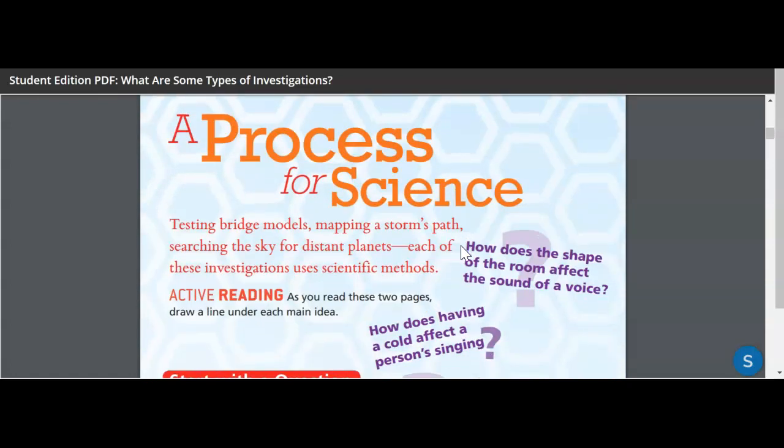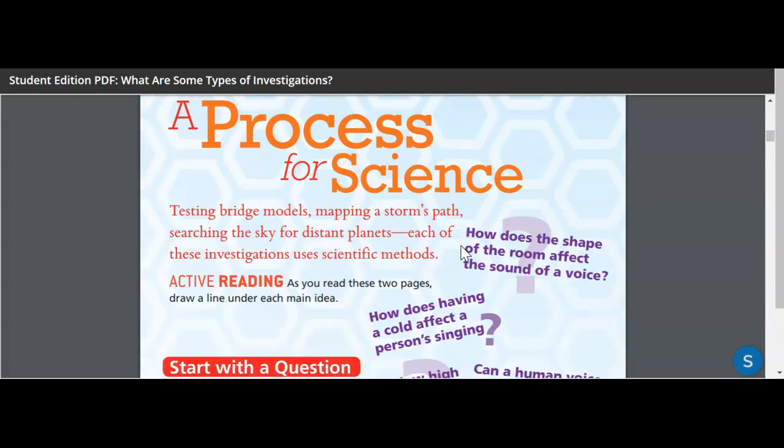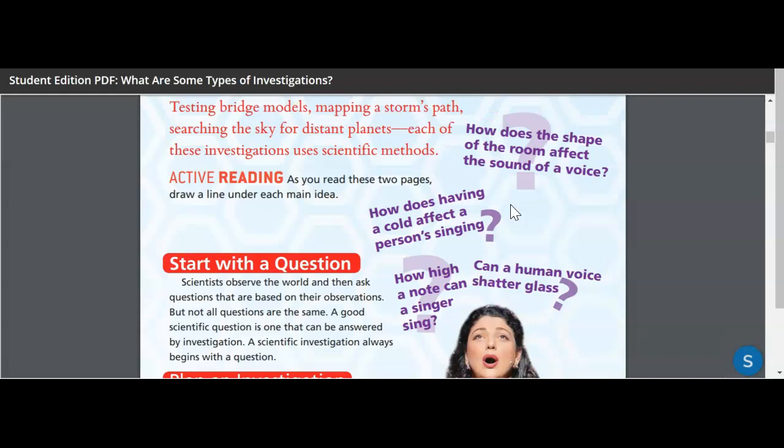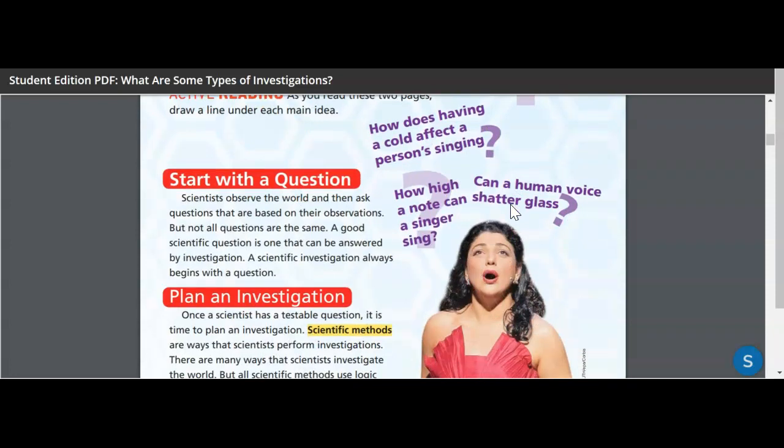So we're moving on to a process for science. So testing bridge models, mapping a storm's path, searching the sky for distant planets, each of these investigations uses scientific methods. So look at the questions over here. All of these questions are starting points for experiments. So you ask a question, and you're going to use a scientific method to answer those questions. Now, the question might be answered and confirmed that this will happen because of this, or your question might not be there. You might get different results, but it starts with a question.